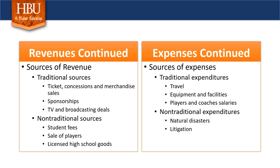Key sources of expenses include traditional expenditures such as travel, equipment, salaries, and facilities. In addition, there have been some non-traditional expenditures seen lately — natural disasters that result in loss of facilities and additional travel costs, and then litigation: institutions, companies, and professional sports being sued, with the costs of protecting themselves resulting in significant expenses.